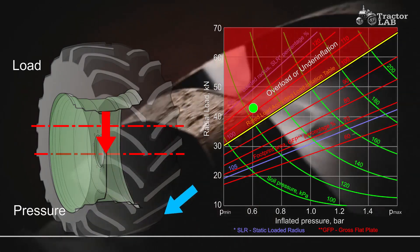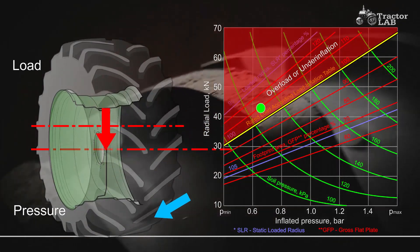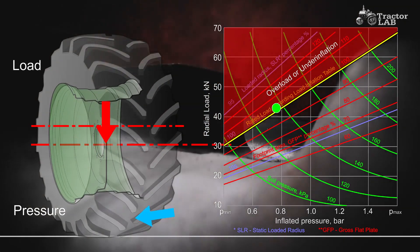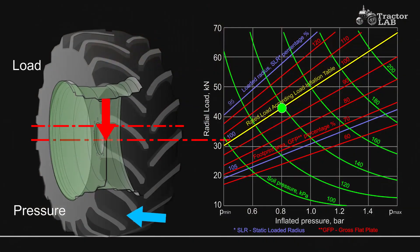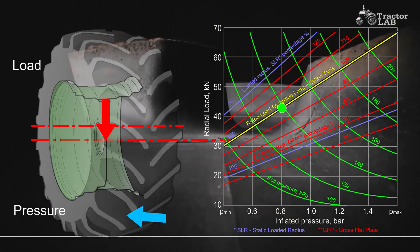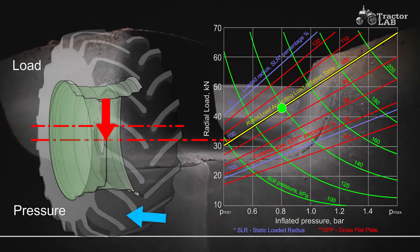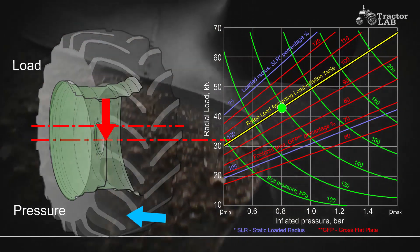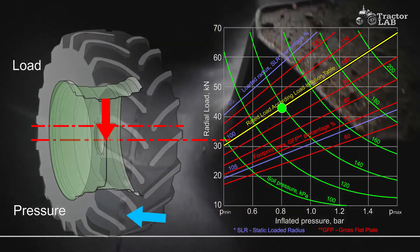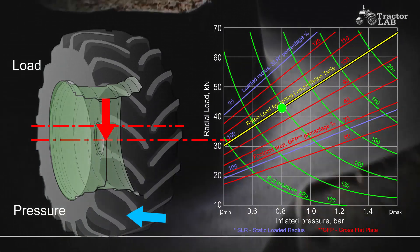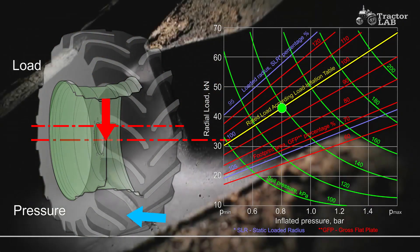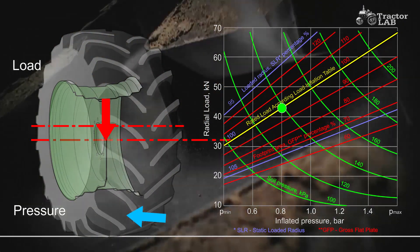Sidewall buckles will develop, leading to carcass breaks in the sidewall. While an under-inflated drive tire may pull better in some soil conditions, this is not generally true and not worth the high risk of tire damage incurred.